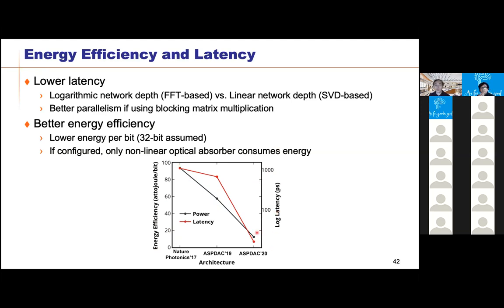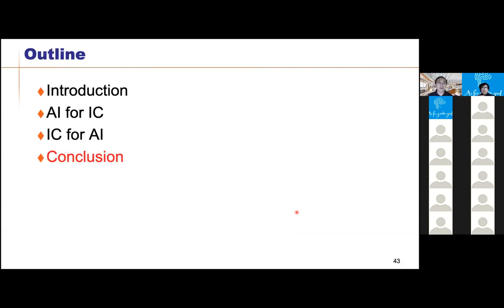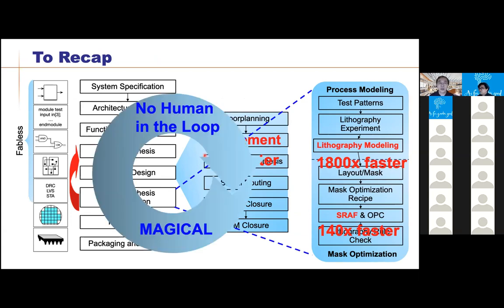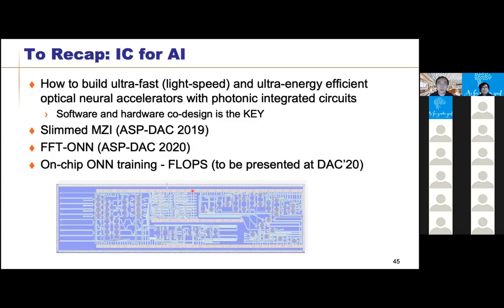To recap: DREAMPlace achieves 40x speedup; LiSoGAN for lithography modeling is thousands of times faster; GAN-based OPC/SRAF insertion is hundreds of times faster; MAGICAL automates analog layout; and for IC for AI, we showed the SLIMMED architecture and the FFT-based block circulant architecture. We also have a paper at DAC this year on on-chip optical network training called FLOPS, and we have even taped out some optical chips currently under testing.